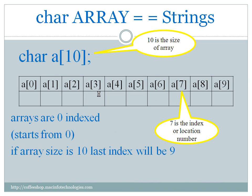We declare a variable 'a' of type char and size 10. You can see it is stored similar to any array — any integer or float array. Arrays are 0-indexed, and if the array size is 10, the last index will be 9.